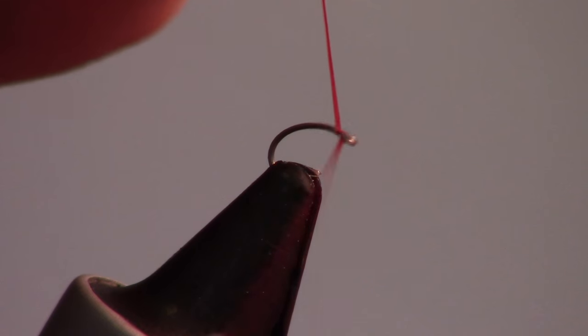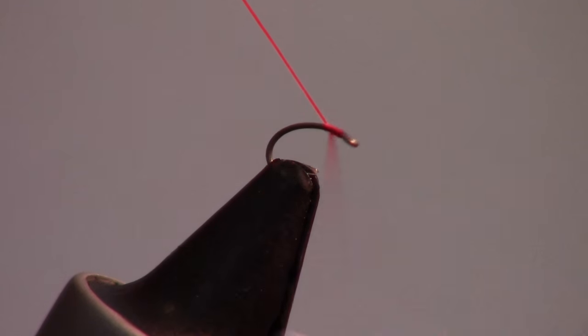Start a fine thread like this 70 denier ultra-thread near the eye of the hook. After clipping the tag end, bring the thread to the back of the hook.